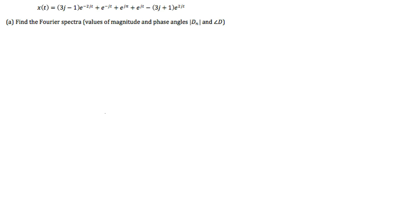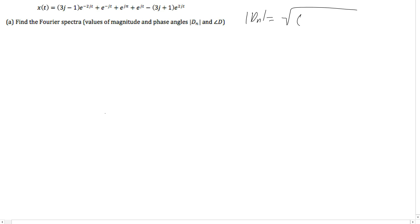Just to remind you how we get the magnitude first: d is going to equal the square root — square the real number first, then square the imaginary number. And for the phase, it's going to be the inverse tangent of the imaginary number over the real number.